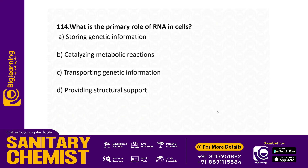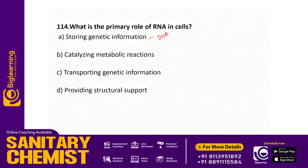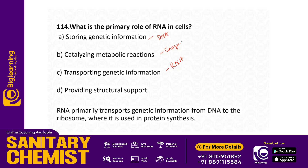What is the primary role of RNA in cells? Options: storing genetic information; catalyzing metabolic reactions; transporting genetic information; providing structural support. Storing genetic information is the role of DNA. Catalyzing is done by enzymes. Structural support is provided by proteins. RNA primarily transports genetic information from DNA to the ribosome, where it is used for protein synthesis.